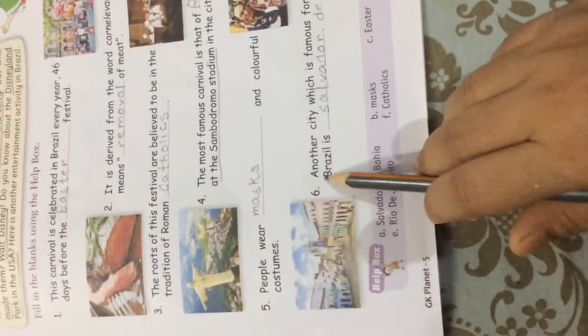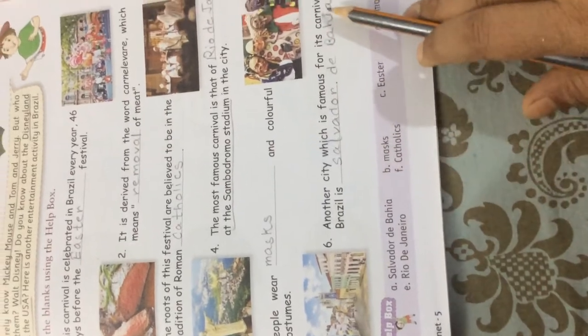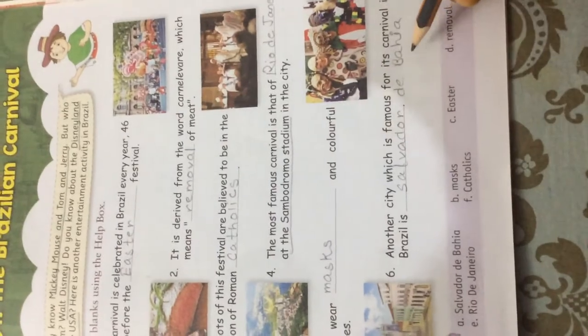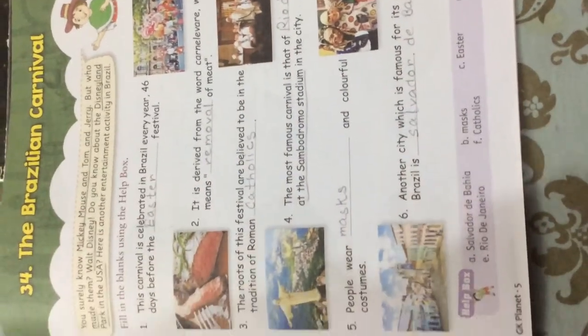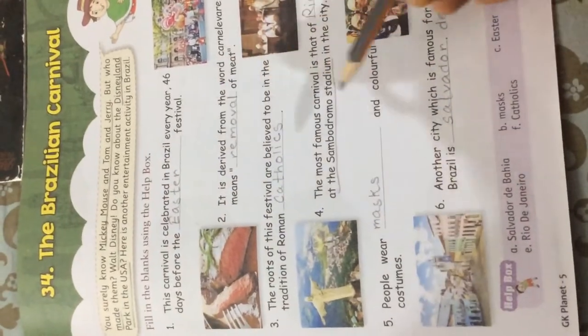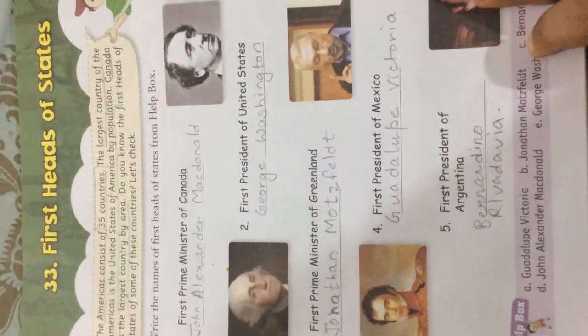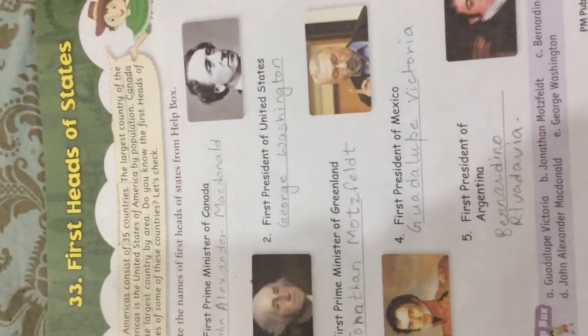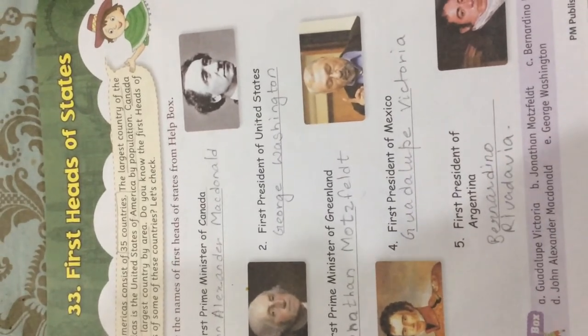Fifth: people wear masks and colorful costumes. Sixth: another city famous for its carnival in Brazil is Salvador de Bahia. So these were some important points for the Brazilian Carnival and the first heads of states. Note it down and start learning your chapters. Thank you.